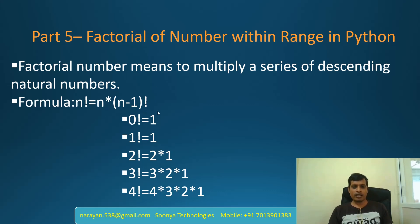In this program, if we provide range as 5, then we will get output as 0 factorial, 1 factorial, 2 factorial, 3 factorial, 4 factorial and 5 factorial. We will discuss two variants for factorial of number within range: one is using for loop, another one is using a method.